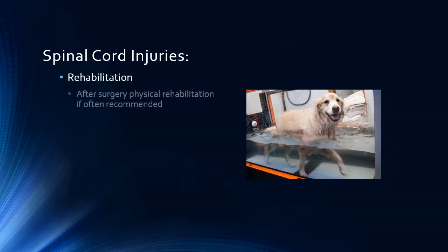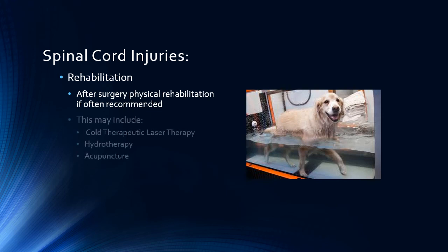After spinal surgery, rehabilitation techniques may be employed to speed up your pet's recovery. Modes employed by rehabilitation centers may include cold therapeutic laser, hydrotherapy, acupuncture, and others. While rehab therapy adds to the expense, it has been shown to hasten the healing and return to function of pets undergoing spinal surgery.